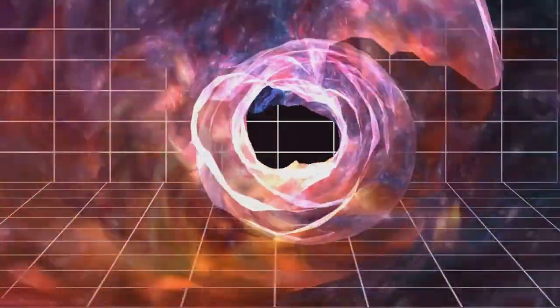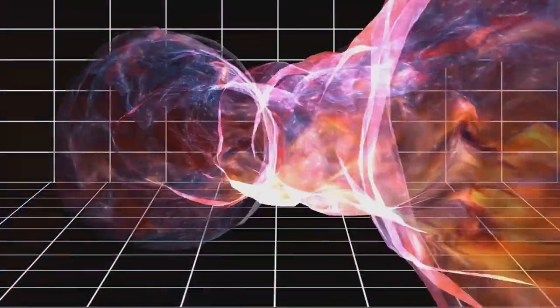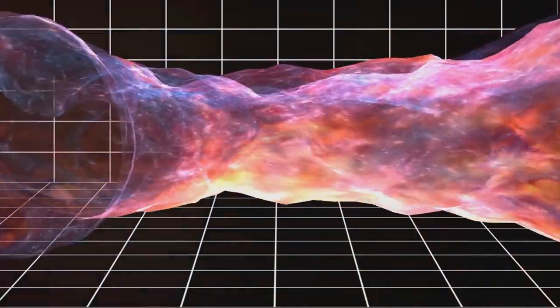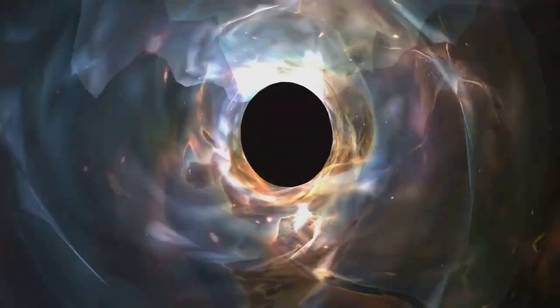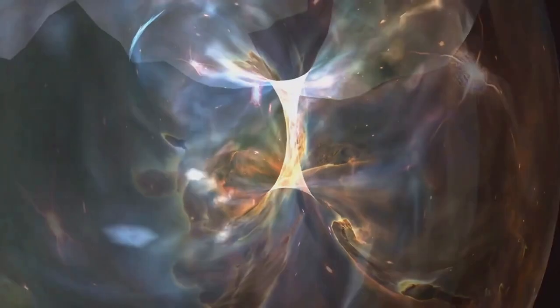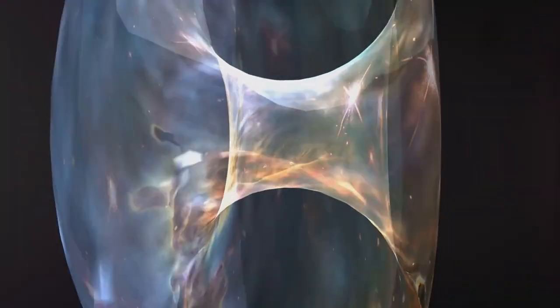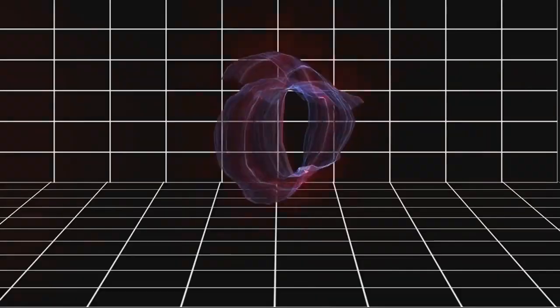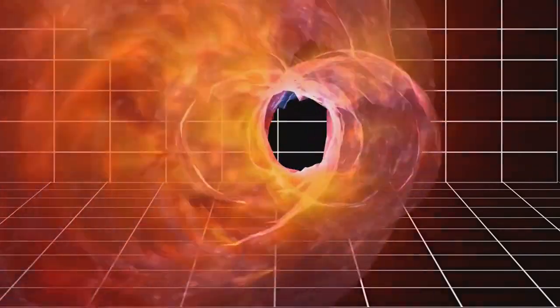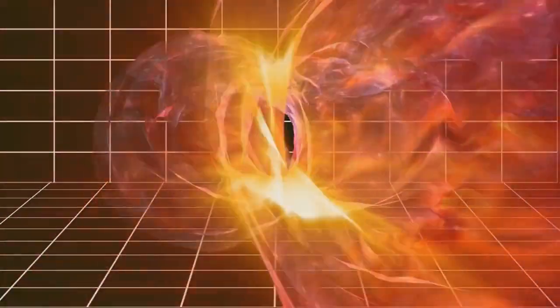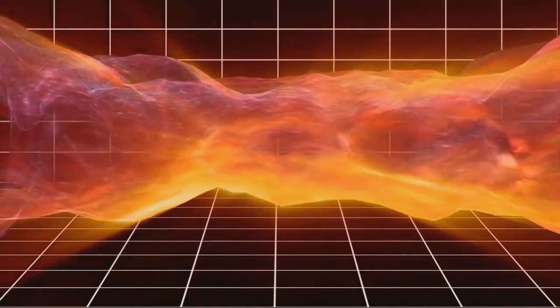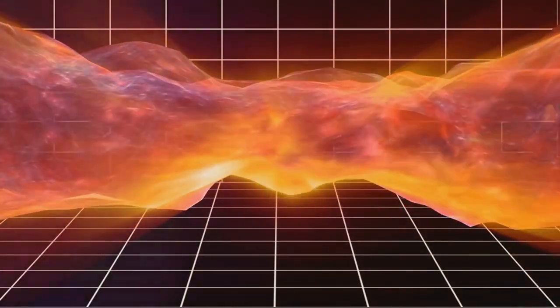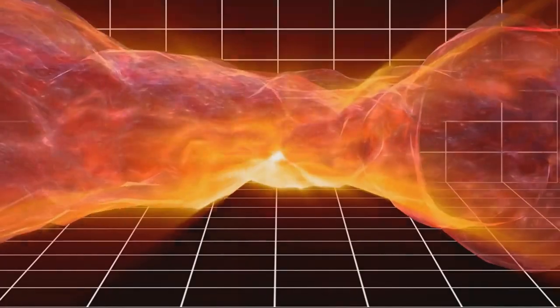Dark matter, as the name implies, is a form of matter that doesn't interact with light or any other form of electromagnetic radiation, making it invisible and elusive. It's like the universe's phantom, felt but never seen. We know it exists because of the gravitational effects it has on galaxies and large-scale structures in the universe. Then there's dark energy, a mysterious force that's causing the universe to expand at an accelerating rate. It's like the universe is on a never-ending growth spurt, and dark energy is the fuel driving this expansion.